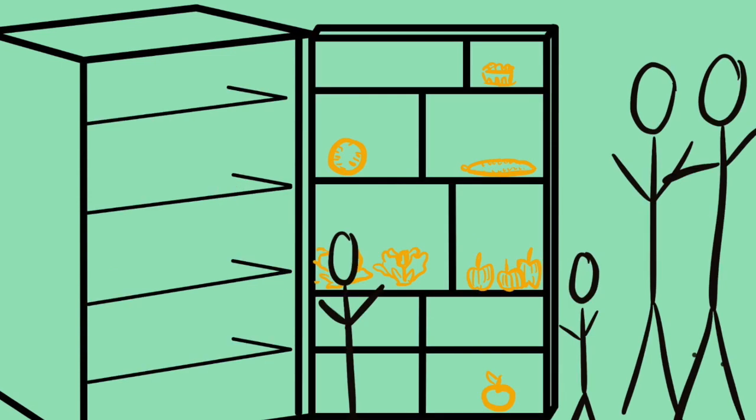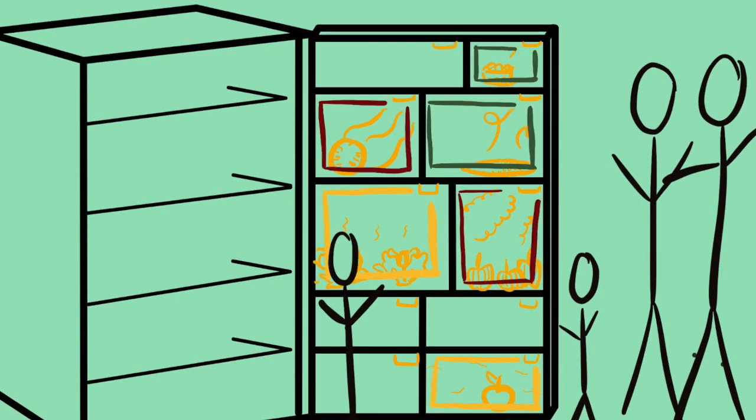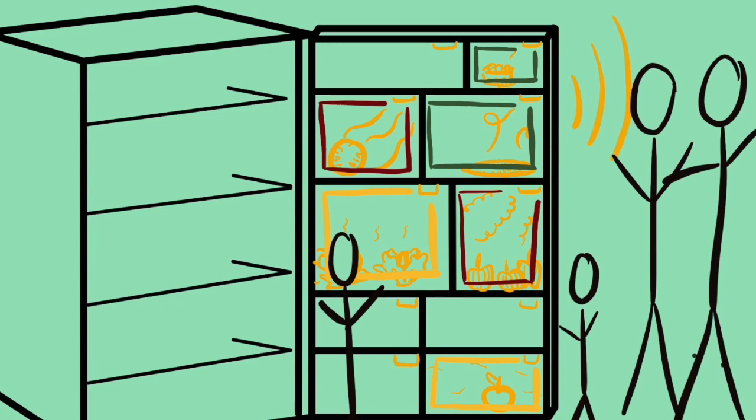The product I am offering is simple for consumers to use. All consumers need to do is place produce in the door compartments. The fridge would be the one gathering and communicating information.